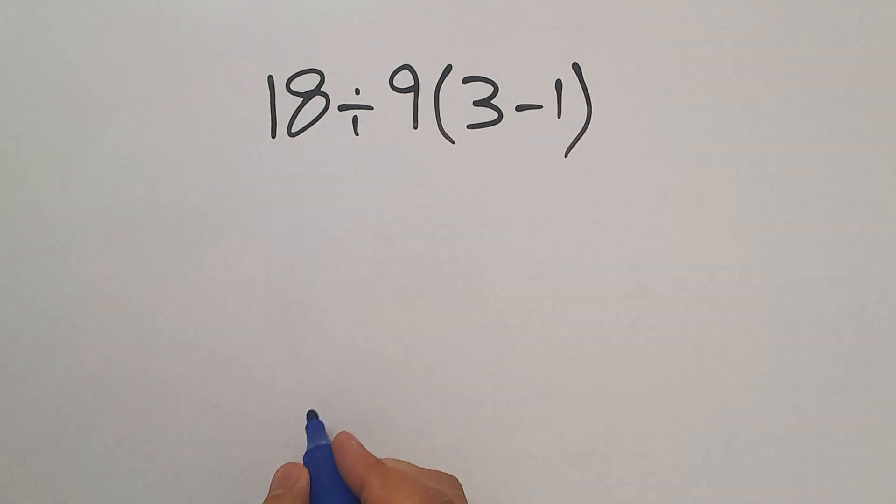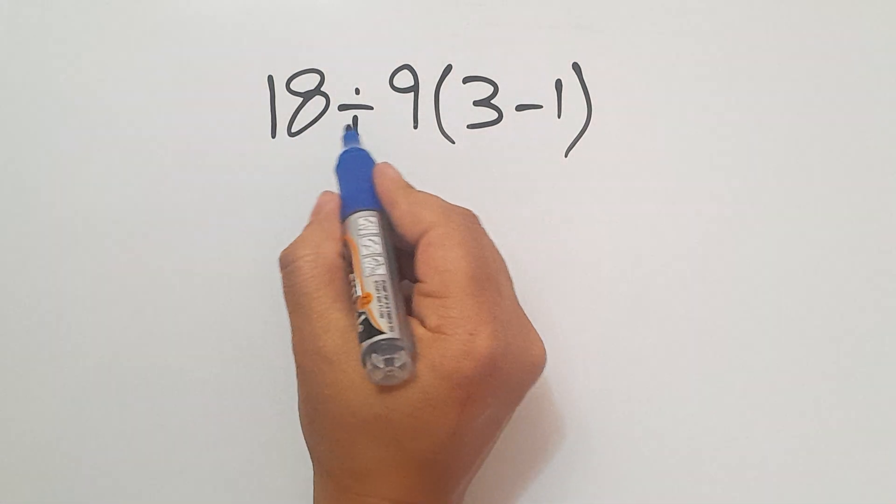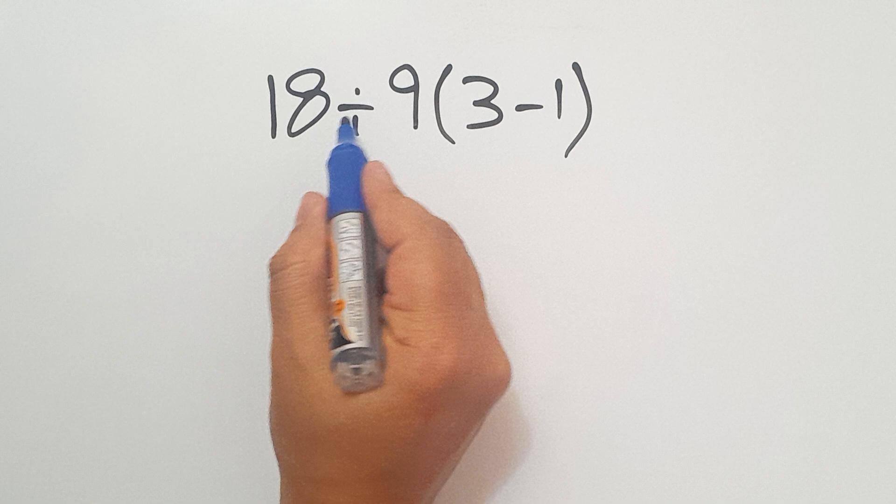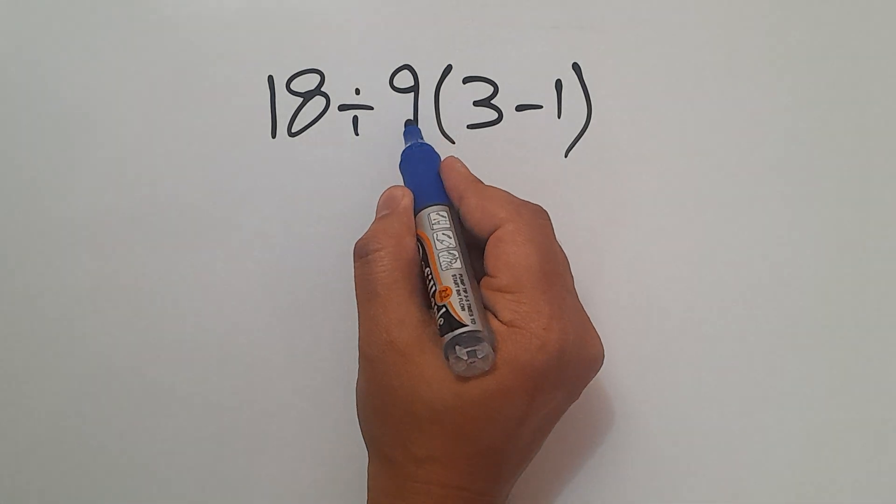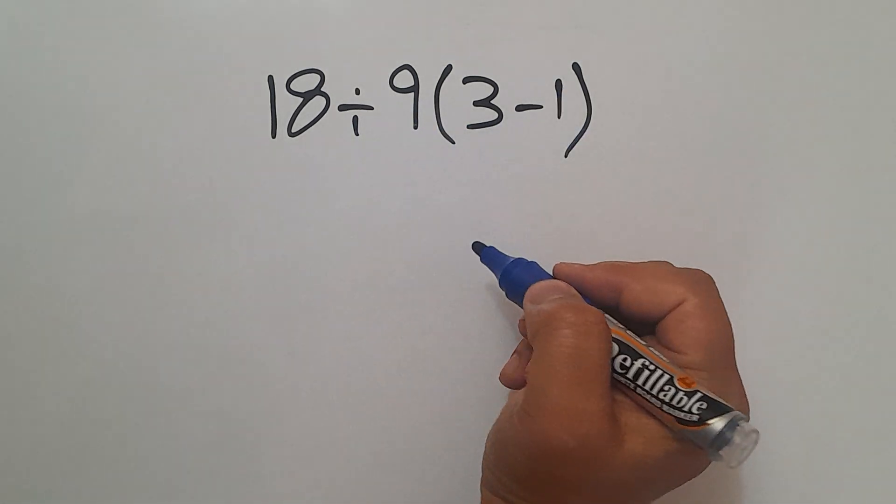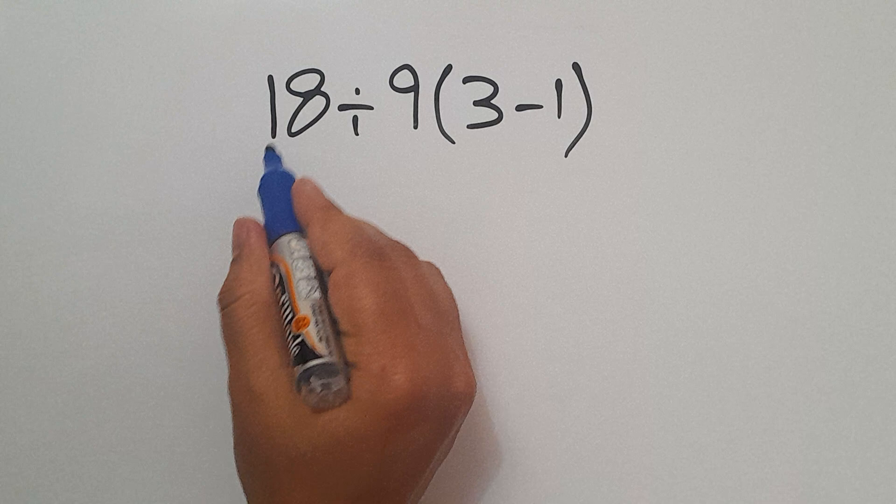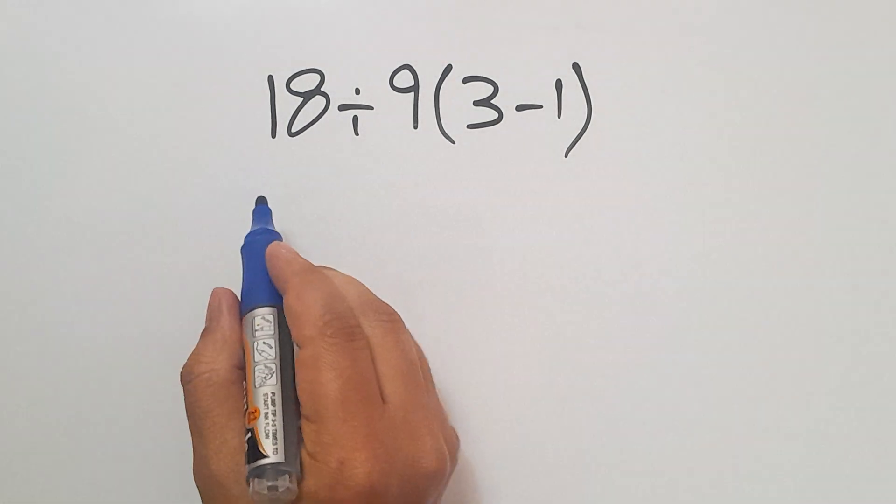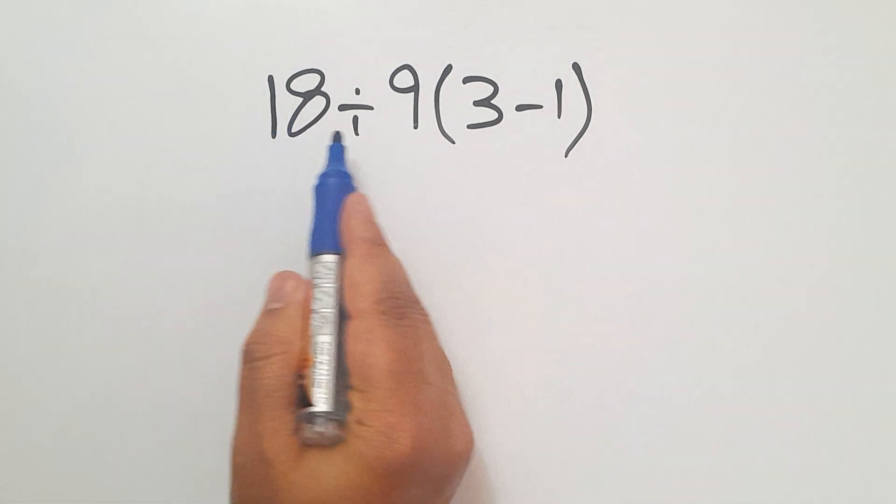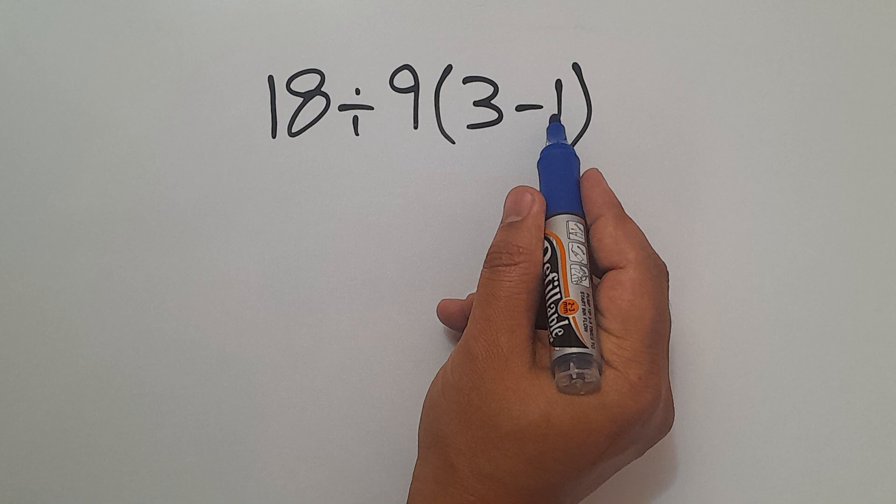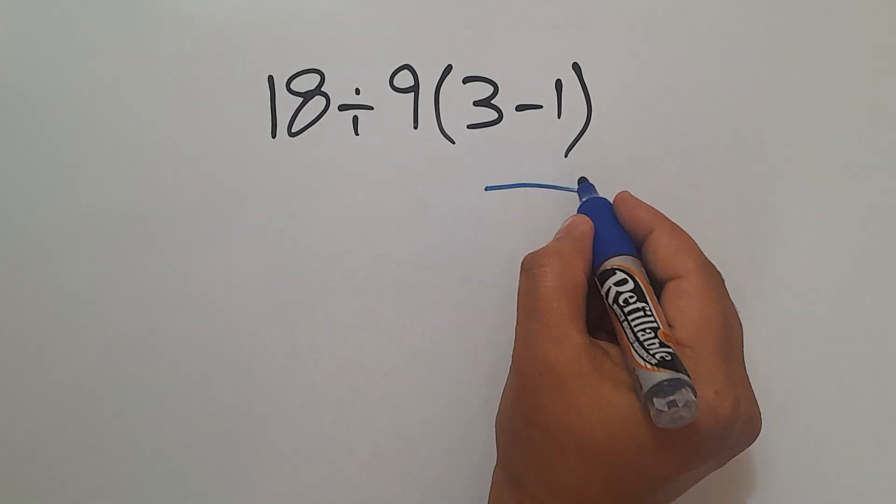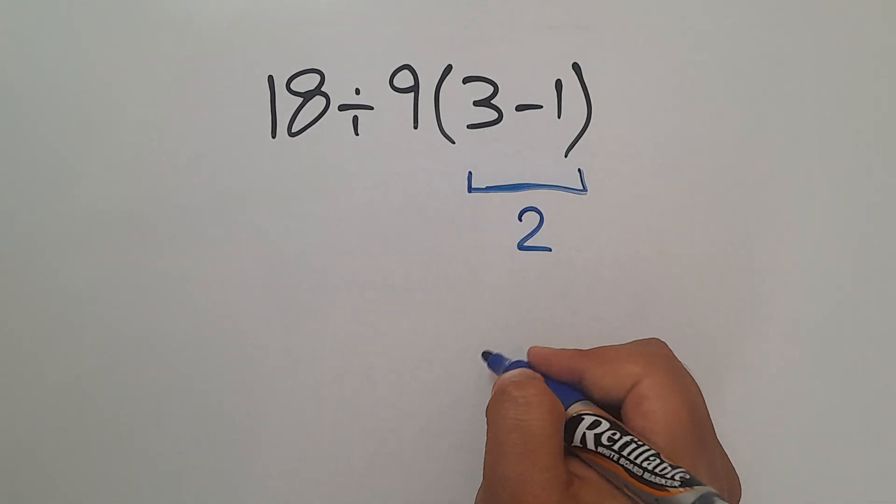Hey guys, and welcome to this video. In this video we want to calculate this expression: 18 divided by 9, then times 3 minus 1. Are you ready to solve? Let's get started. First, 3 minus 1 equals 2.